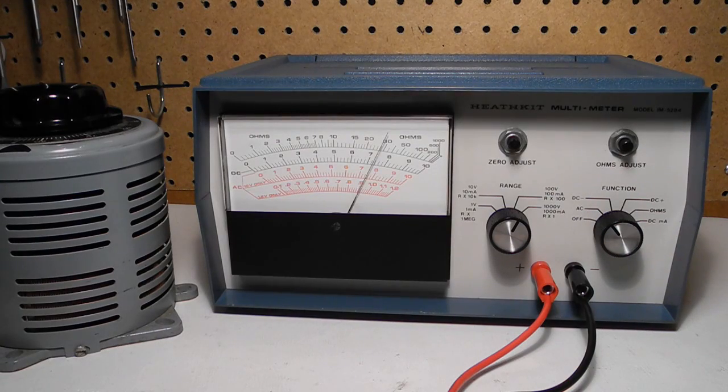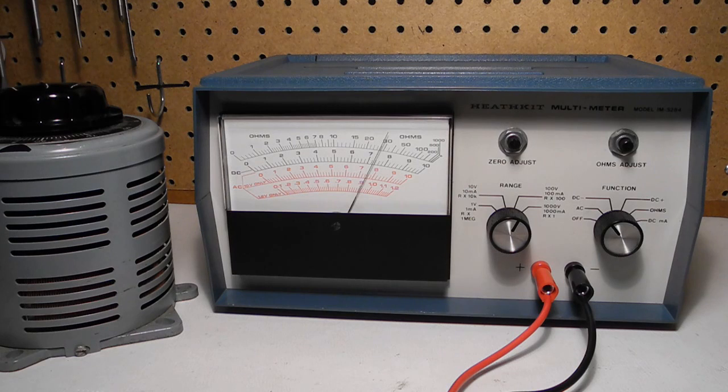AC voltage is similar. Here I'm measuring the output of a variac or auto transformer with the function set to AC and getting a reading of about 75 volts AC.